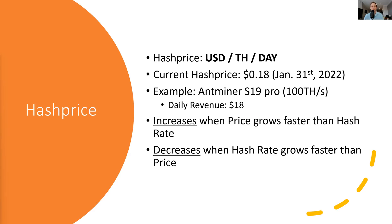Hash price is basically how many dollars a single terahash will make you per day. For example, the current hash price is sitting at around $0.18, as we saw on the last chart. By the way, this is January 31st, 2022. Obviously, this is going to change over time.